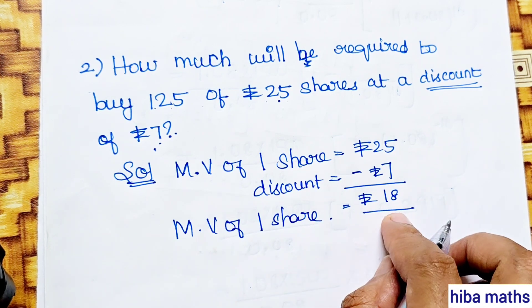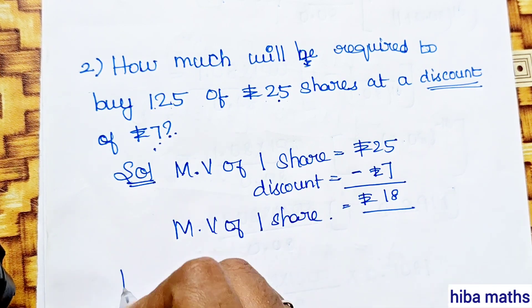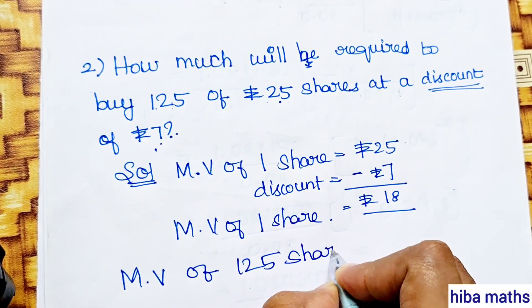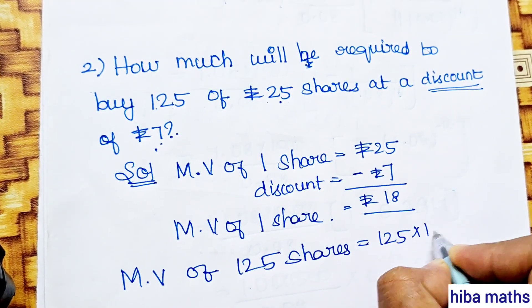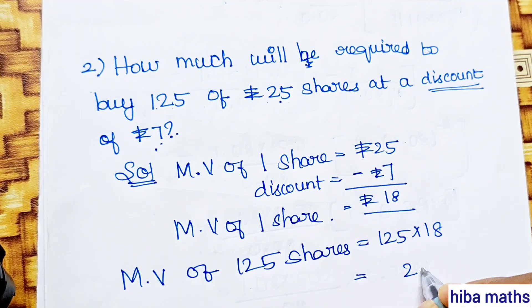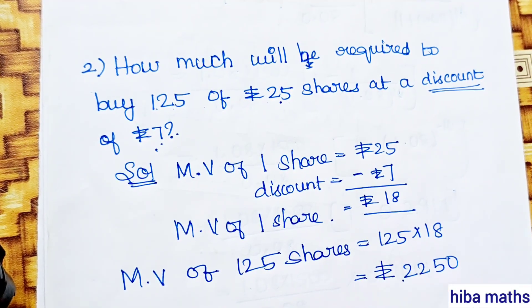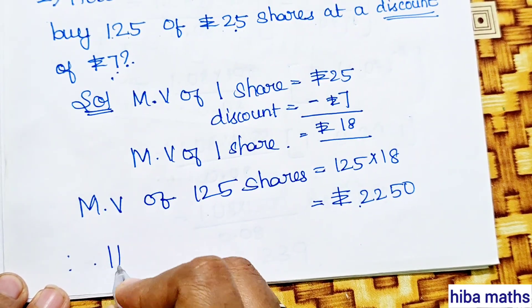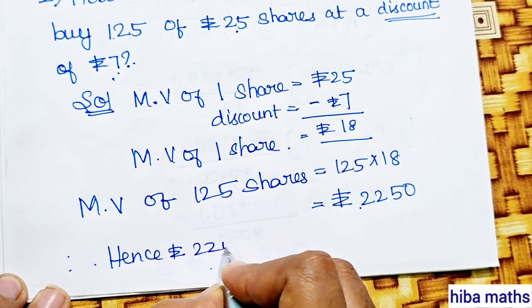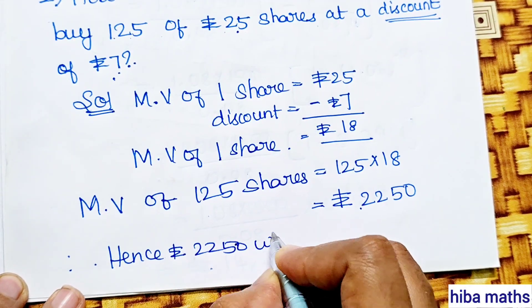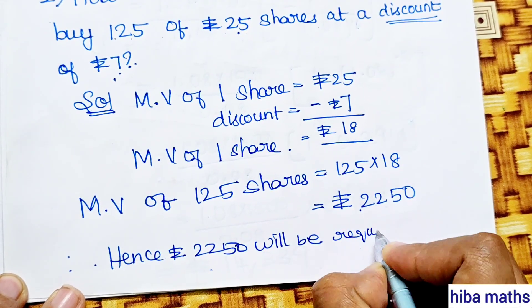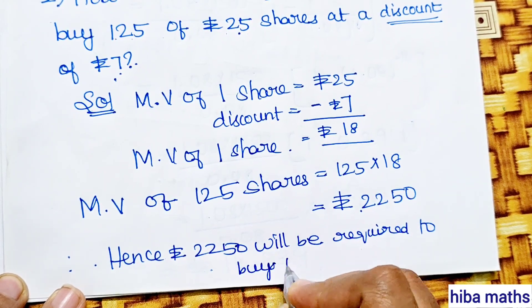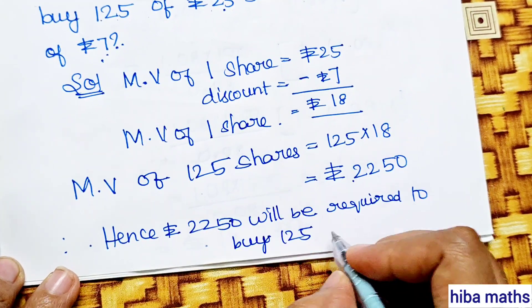The market value of 125 shares: 125 into 18 equals 2250. The answer is rupees 2250. Therefore, rupees 2250 will be required to buy 125 shares.